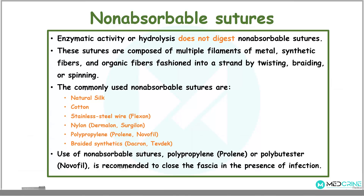On the other hand, we have non-absorbable sutures, whereby enzymatic activity or hydrolysis does not digest them. These sutures are composed of multiple filaments made of metal, synthetic fibers, or organic fibers, which are fashioned into a strand by twisting, braiding, or spinning. The commonly used non-absorbable sutures are natural silk, cotton, stainless steel wire, nylon, polypropylene, and braided synthetics such as dacron. The use of non-absorbable sutures — polypropylene and polybutester — is recommended to close fascia in the presence of infection.